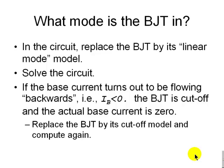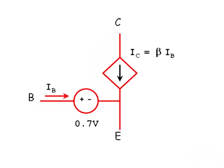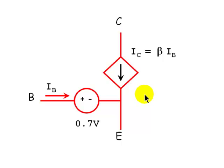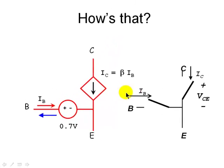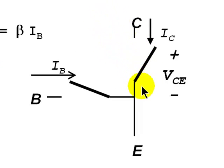What's next? We replace the equivalent circuit already in place with the cutoff model and recompute the circuit. To recap: we replace the transistor with the linear model and solve for IB. If that current is negative — for an NPN transistor — the BJT is in cutoff mode, and we replace the linear model with the cutoff model, then solve the entire circuit again.